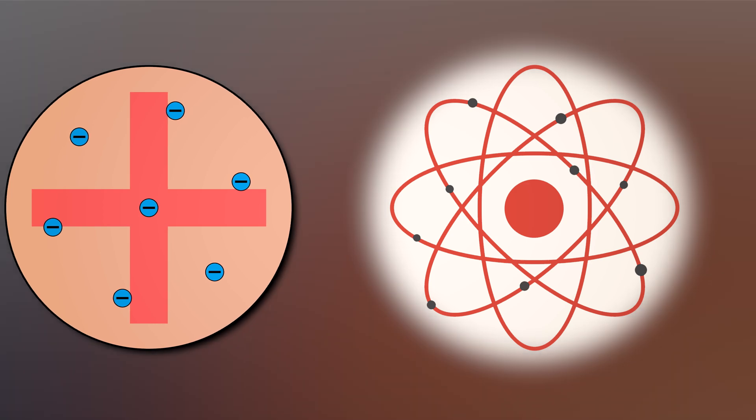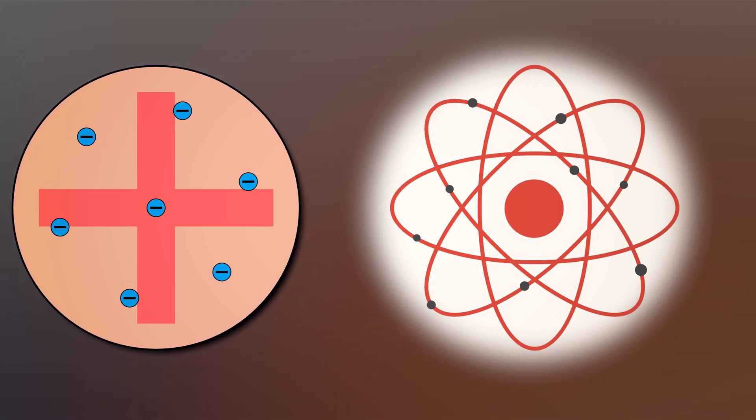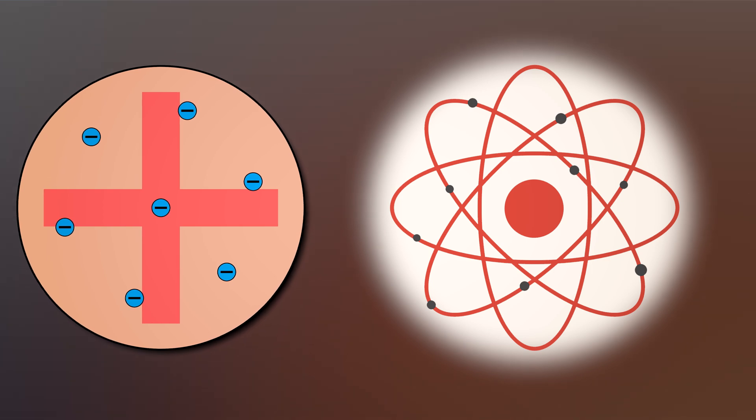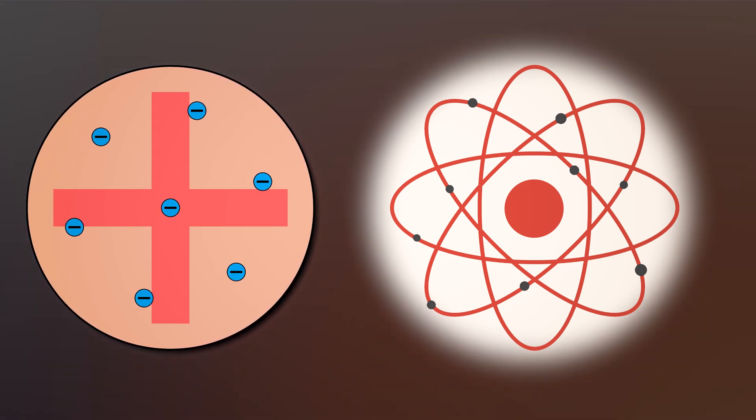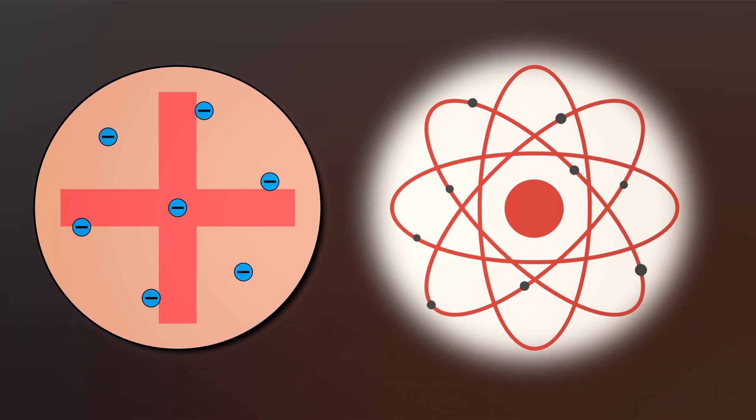In contrast to Joseph John Thomson's plum pudding model where electrons were thought to be embedded in a positively charged pudding of matter, Ernest Rutherford's nuclear model proposed a radically different atomic structure.